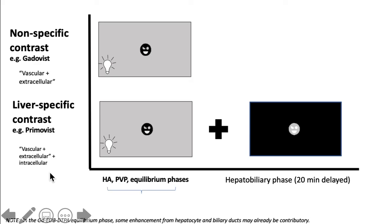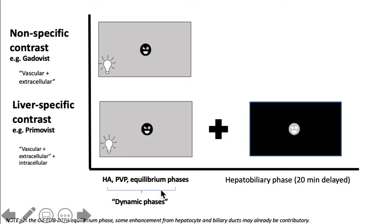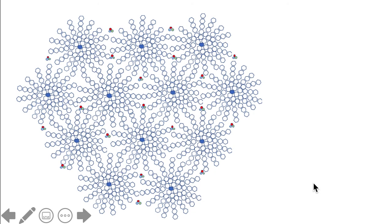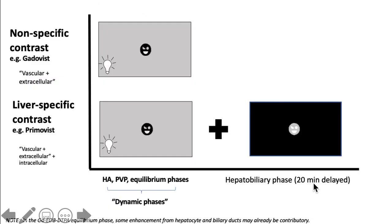It's worth mentioning that non-specific contrast and liver-specific contrast behave similarly in the dynamic phases. The special characteristic of Primovist is that it is able to check for hepatocyte presence and function during the hepatobiliary phase.